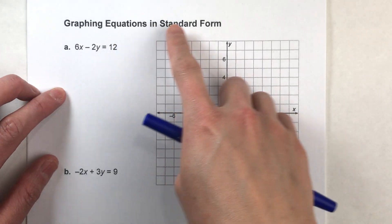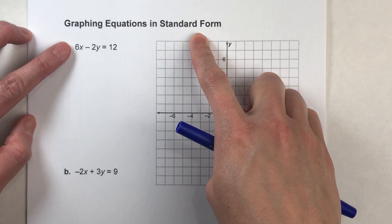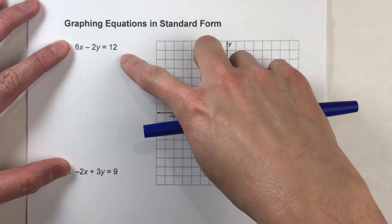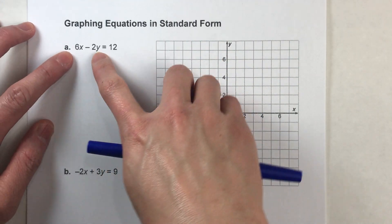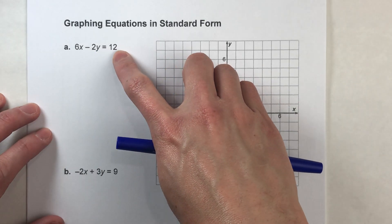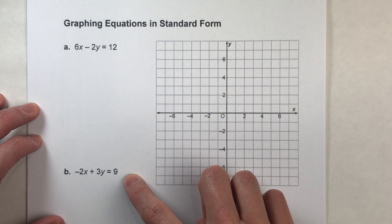So today we're going to be graphing equations in standard form. Now these two equations are examples of equations that are in standard form. Notice we have x and y on the same side of the equal sign, equal to just a regular number on the other side.